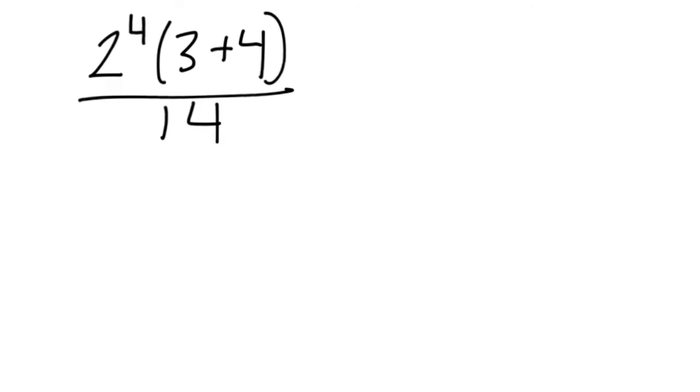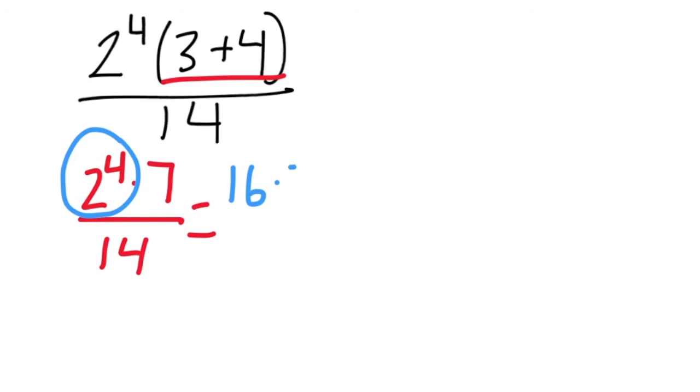Here's our harder expression to evaluate. We got 2 to the 4th times the quantity 3 plus 4 all over 14. Parentheses become 7. 2 to the 4th means 2 times 2 times 2 times 2 which is 16 times 7 over 14.